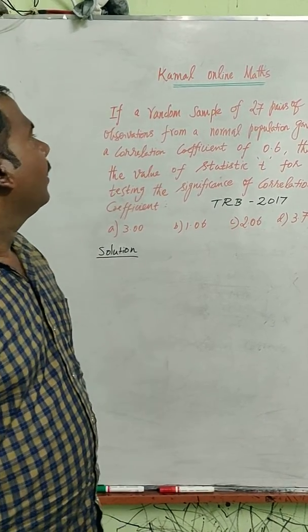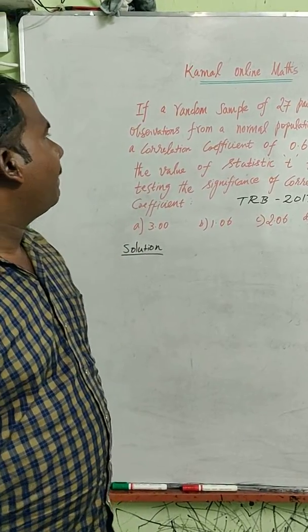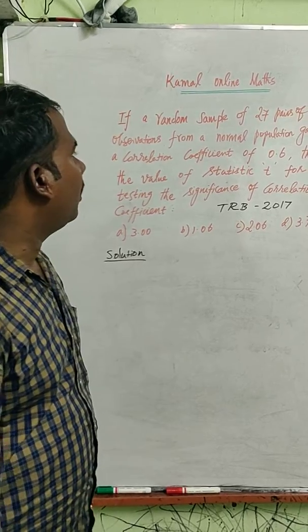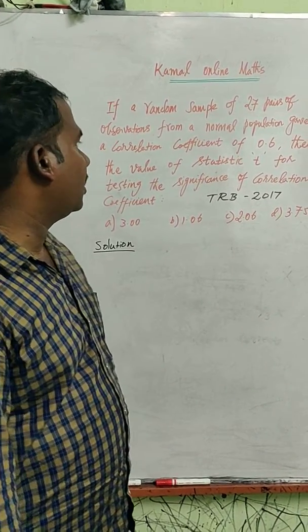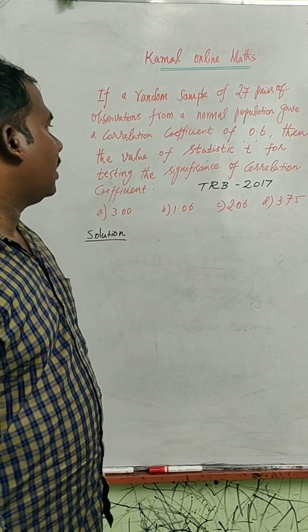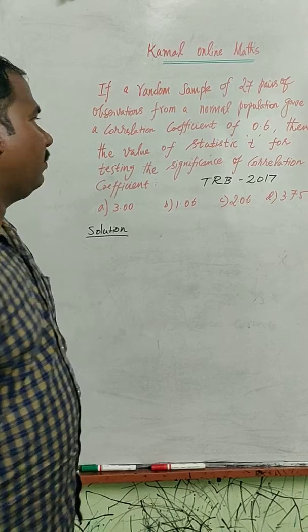Welcome, welcome. It is our statistics question, Saval Pandra. Question: if a random sample of 27 pairs of observations from a normal population gave a correlation coefficient 0.6, then the value of statistic t for testing the significance of correlation coefficient.